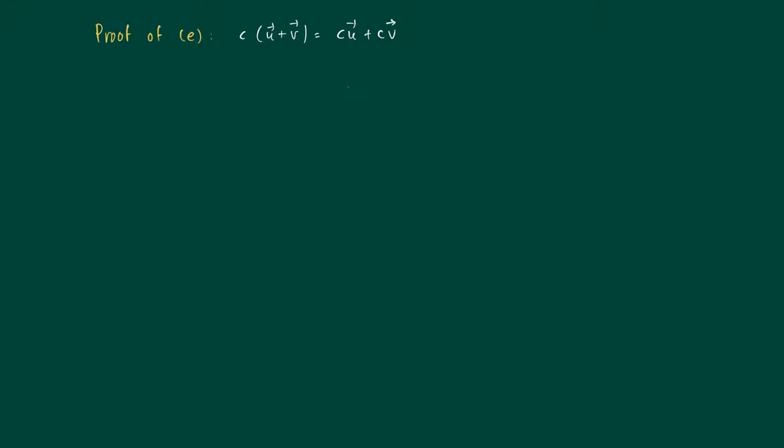We will show using the properties that we discussed before that c times the sum of two vectors u plus v equals c times u plus c times v.